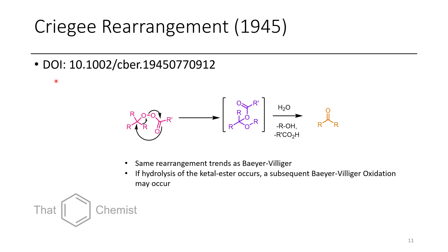Now let's get to today's main material: the Cragi rearrangement. This looks a bit like Baeyer-Villiger oxidation. The difference is that instead of something like MCPBA reacting with a ketone, we typically have a hydroperoxide that can be acylated using an anhydride or acyl chloride, which then usually spontaneously undergoes rearrangement to form an ester-ketal type product that can be hydrolyzed to the corresponding ketone. The migratory aptitude trends match what we'd see in Baeyer-Villiger — check that video for details.